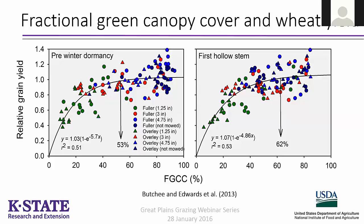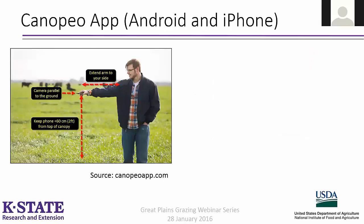In order to use Canopeo, the goal is to estimate the wheat pasture's percent green canopy cover when reaching first hollow stem, or before that, so we can manage and maintain the green canopy cover above this threshold. All that is needed is to go out to the wheat pasture, open the app on your smartphone, extend the arm to the side so your shoes are not included in the picture — obvious but important — then hold the camera parallel to the ground about two feet above the crop canopy and take the picture.